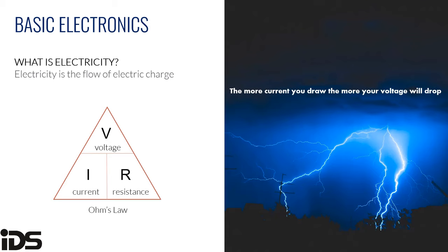Current is the movement of electrical charge — the flow of electrons through a circuit — measured in amperes or amps. When we talk about how much power a device uses, we're generally talking about how much current it draws. Resistance is anything that causes opposition to the flow of electricity in a circuit. It is used to control the amount of voltage or current, and is measured in ohms. Resistors are components that cause resistance and are often used in alarm systems, most notably when a zone is end-of-line resistor supervised.